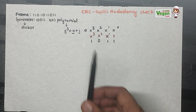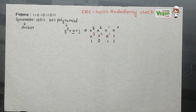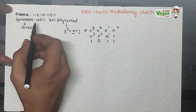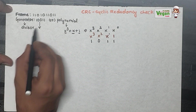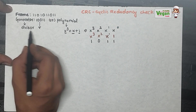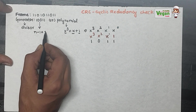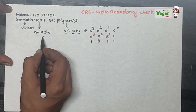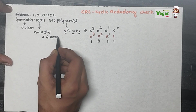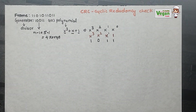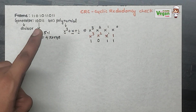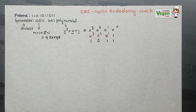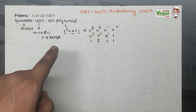Like this, you convert and then proceed with the problem. The first step is to find the number of zeros you must add to the frame. There are 5 bits in the generator or divisor, so n minus 1 equals 5 minus 1, which is 4. Therefore, you must add 4 zeros to the given frame while solving the problem.